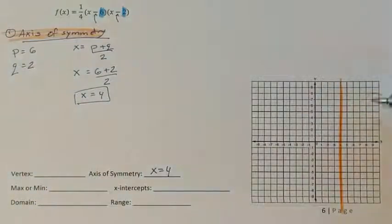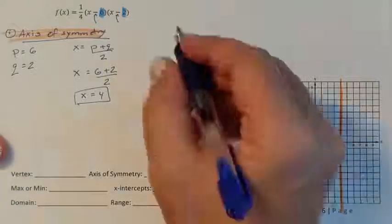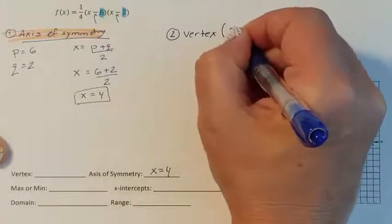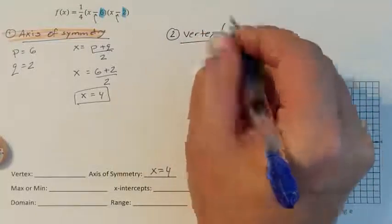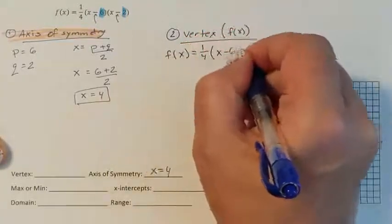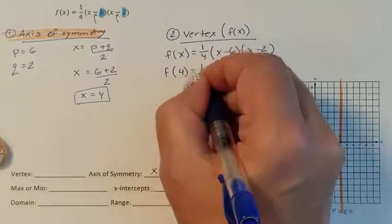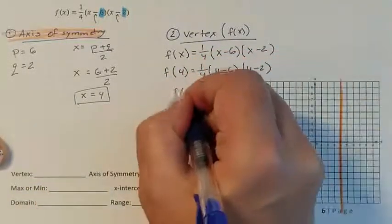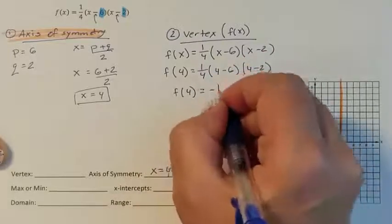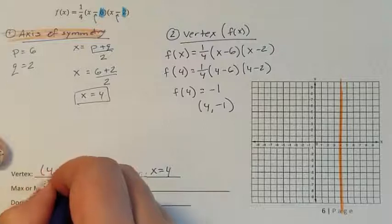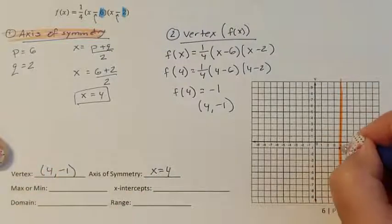Now I need to figure out where on this line my vertex lives. And to figure out where on the line the vertex lives, you need to solve for f(x). And you're solving it for the value that you just found. Typing this into my calculator, I get negative 1. So my vertex is at the coordinate point 4, negative 1, which means my vertex lives right here.